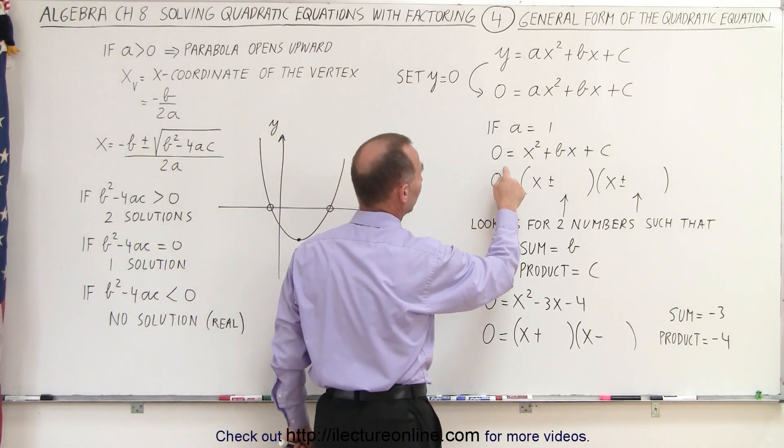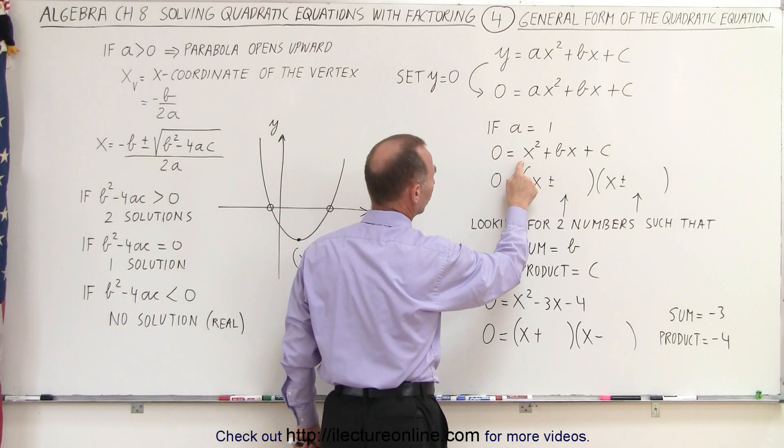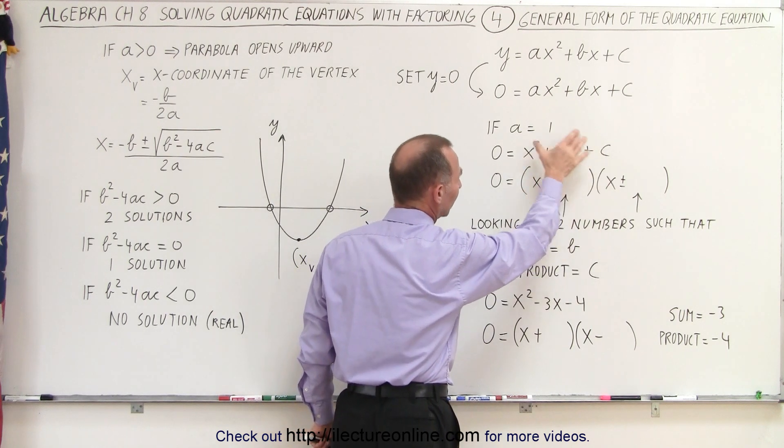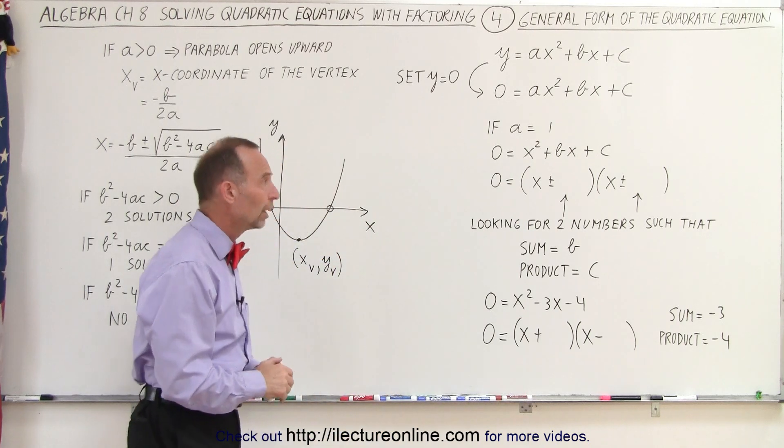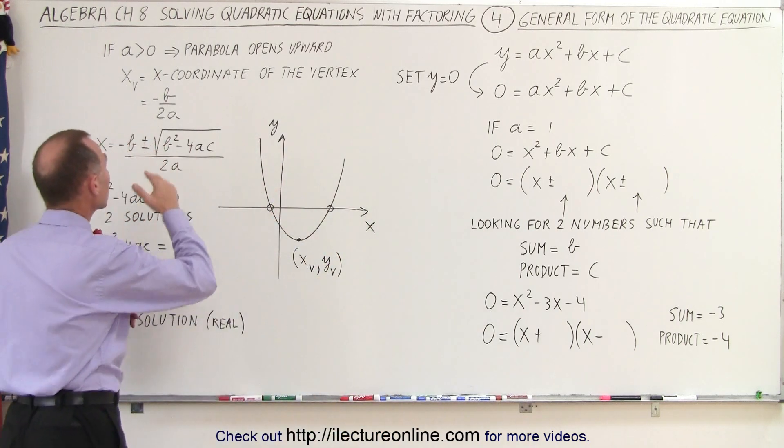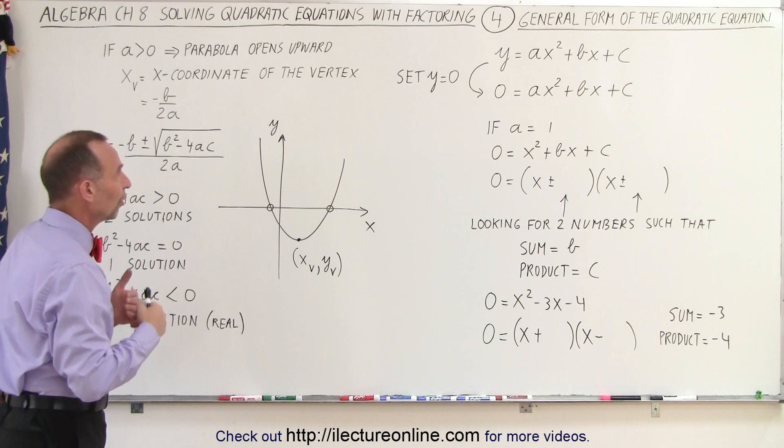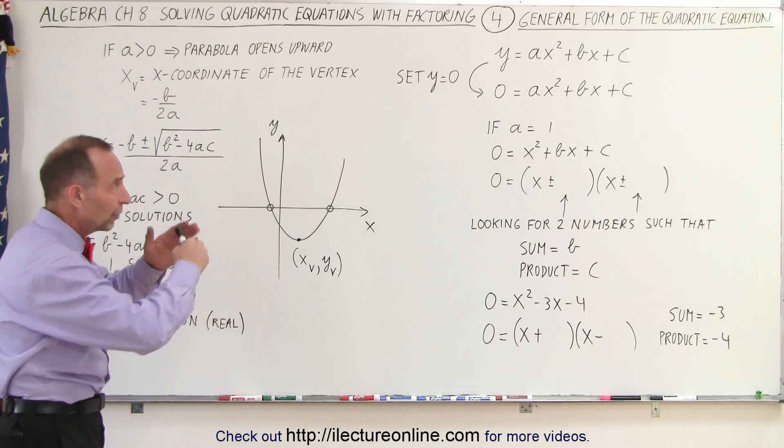Now, if a equals 1, then of course the equation looks 0 equals x squared plus bx plus c. That's the easy case, and of course harder cases is where it's not equal to 1. But before we go there, let's come over here and notice some other pieces of information about the general form.